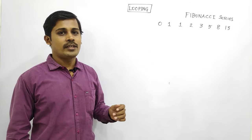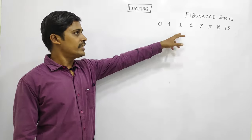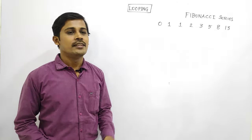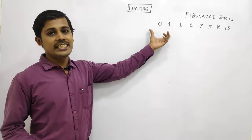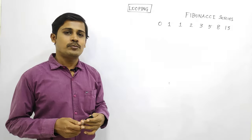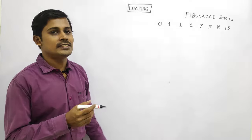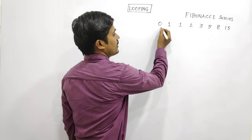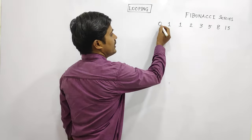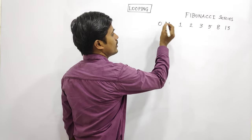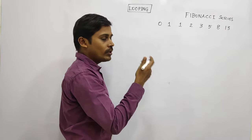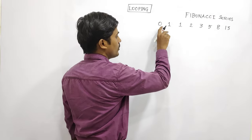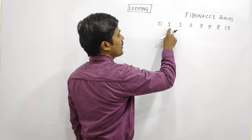Let's get started with the looping program. How about this program? Fibonacci Series. Fibonacci Series 1, 0 and 1, 2. This is the first number.